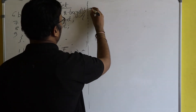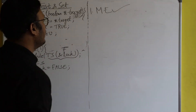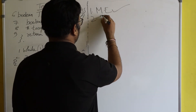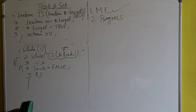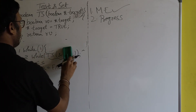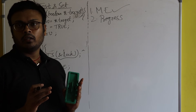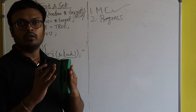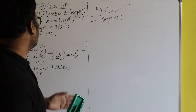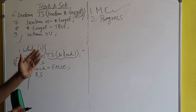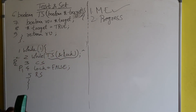The first important point is that mutual exclusion is guaranteed in test-and-set. Is progress there? Obviously yes — when one process is not interested, it should not stop other processes from entering the critical section. Nothing such is happening here, so progress is clearly guaranteed.